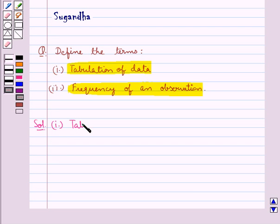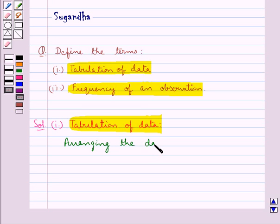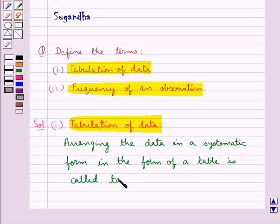First we will define tabulation of data: arranging the data in a systematic form. Tabulation of data in the form of a table is called tabulation of data.